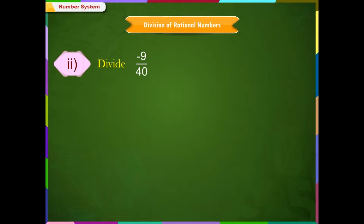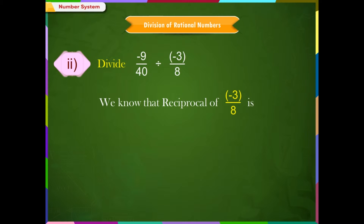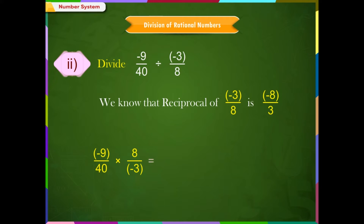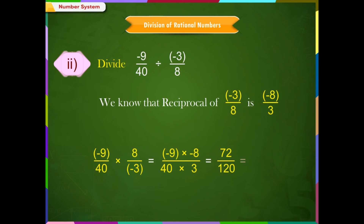Example 2: Divide minus 9/40 by minus 3/8. We know that the reciprocal of minus 3/8 is minus 8/3. Therefore, minus 9/40 ÷ (minus 3/8) equals minus 9/40 × (minus 8/3), which equals (minus 9 × minus 8)/(40×3), which equals 72/120, which simplifies to 3/5.